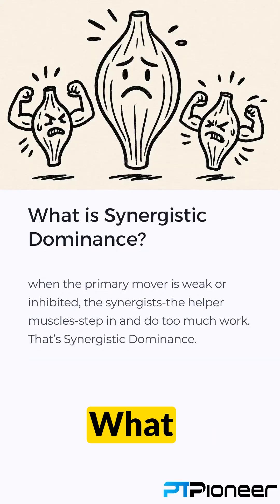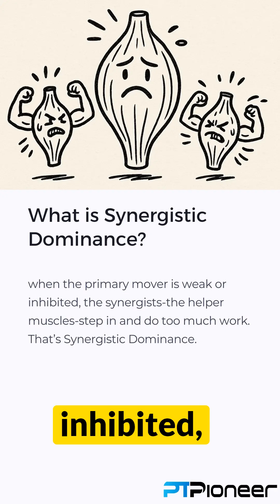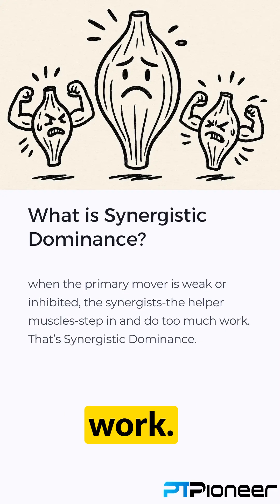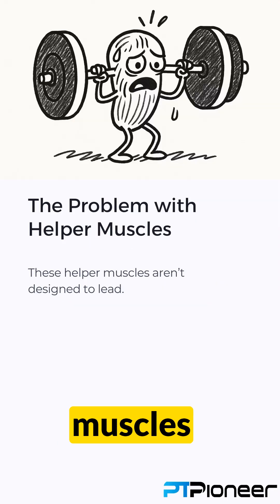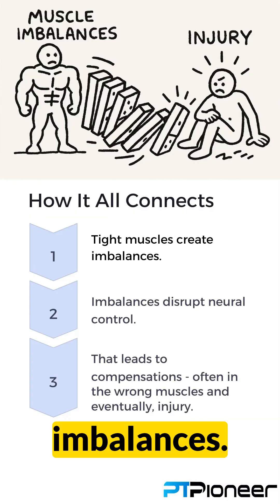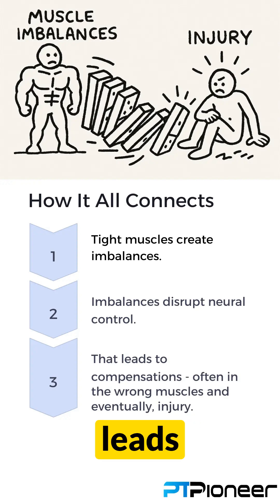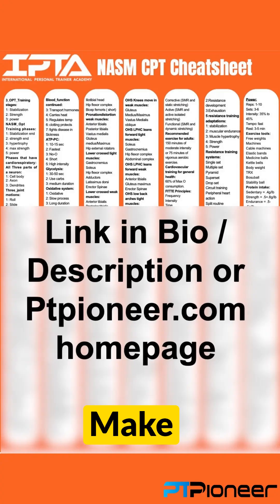When the primary mover is weak or inhibited, the synergists — the helper muscles — step in and do too much work. That's synergistic dominance. The problem is these helper muscles aren't designed to lead. Tight muscles create imbalances, imbalances disrupt neural control, that leads to compensations often in the wrong muscles, and eventually injury.